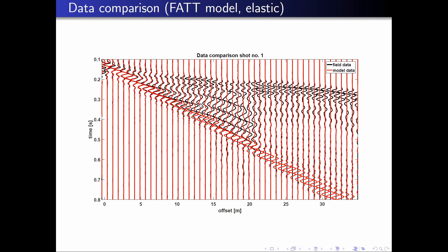If you look at this comparison, you might think: what kind of nonsense model was produced by the first arrival travel time tomography? While you can see a Love wave, it is not as dispersive as the field data and it is also not damped at all after passing the Fossa Carolina canal. The first arrival waveform is also completely missing in the modeled data. The problem is that we ignored a very important property of the near-surface soil: intrinsic damping.